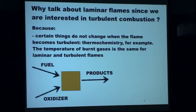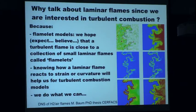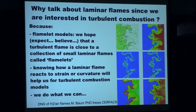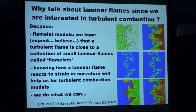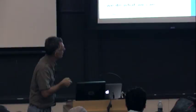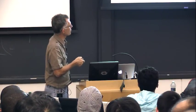The main reason is that we believe — we hope, we expect — that a turbulent flame is a collection of small laminar flames, which we call flamelets. The flamelet world basically says that if you have a turbulent flame like this one obtained by DNS, each element is a little laminar flame. You see why it's useful to understand laminar flames — if each element is a little laminar flame and we know things about them, then we can say something about the turbulent flame.